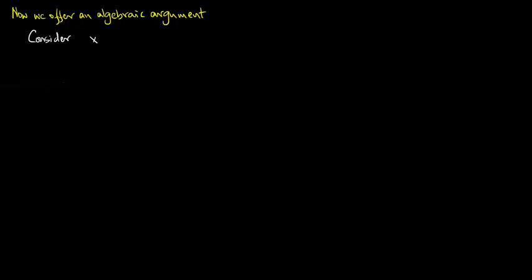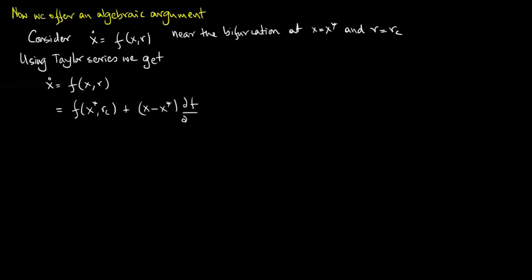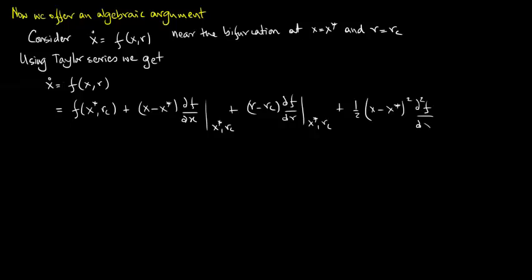We now offer an algebraic argument. Consider x_dot = f(x, r) near the bifurcation at x = x* and r = r_critical. Using Taylor series, we get x_dot = f(x*, r_critical) + (x - x*) · df/dx evaluated at (x*, r_critical) + (r - r_critical) · df/dr evaluated at (x*, r_critical) + (1/2)(x - x*)² · d²f/dx² evaluated at (x*, r_critical) + higher order terms.